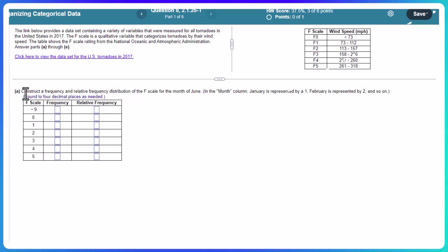Let's see what our first question is. Construct a frequency and relative frequency distribution for the F scale for the month of June. So the month column in January is by 1, February is 2, and so on. Round to four decimals. Okay, I'm just going to get you started on this one. Now you'll probably get a different month. So make sure you pay attention to the month. Mine says June.